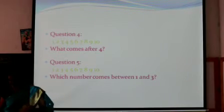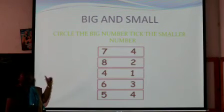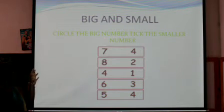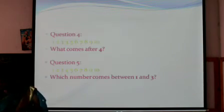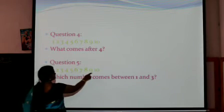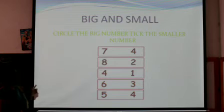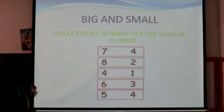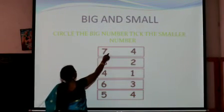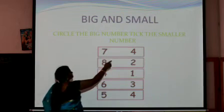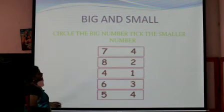Now circle the big number and tick the smaller number — like we did earlier, but here I've directly given you the numbers. Is seven big or four big? Remember our number line one through ten — which is bigger, seven or four? Seven is the bigger number, so circle seven. Four is the smaller number, so put a tick mark next to four.